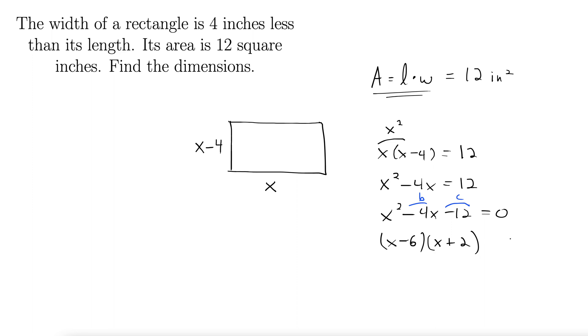Thus, this is the factored form of that equation equals 0. And now we set each one of these equal to 0 from the zero factor property and solve. So that gives us x equals 6, x equals negative 2.